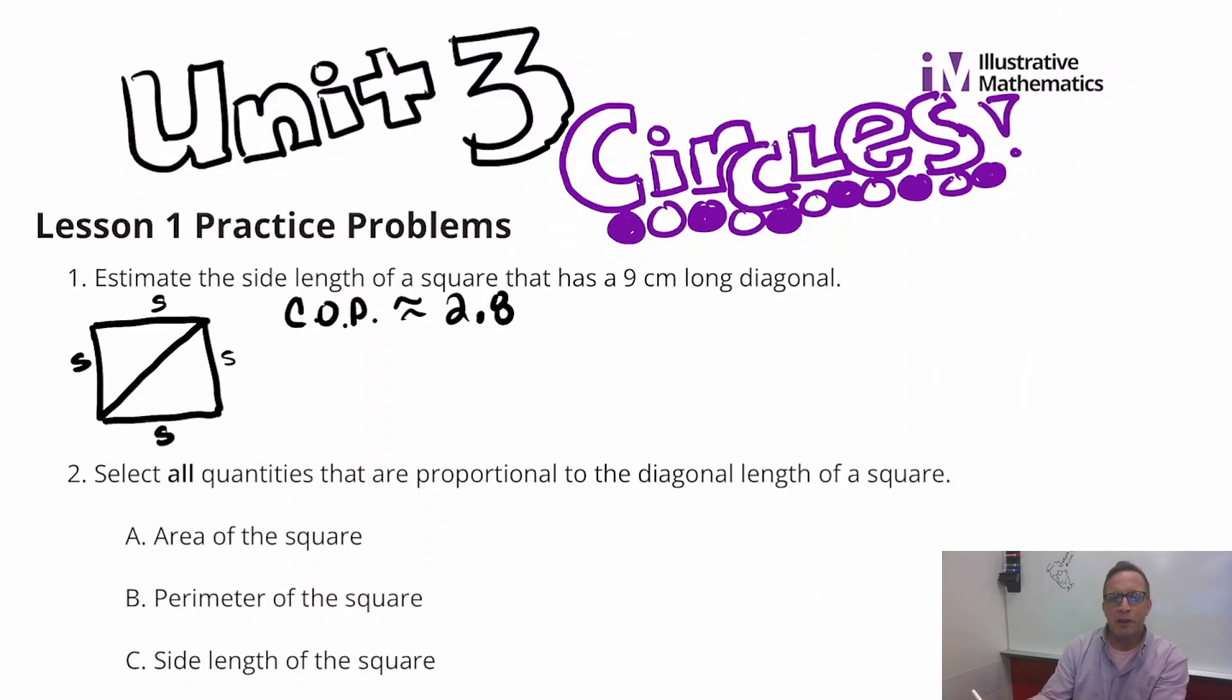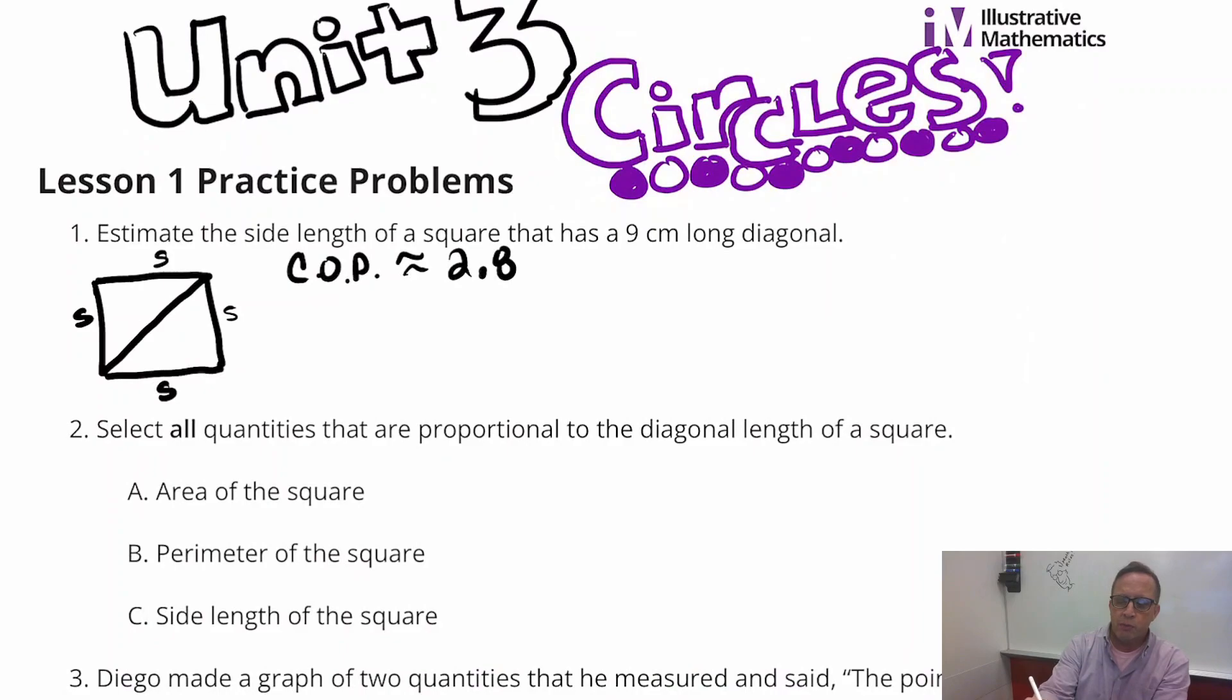You can see whatever the diagonal is, if you multiply that by 2.8, you're going to get the perimeter of that square, or something close to it, not perfect, but you're going to get something pretty close to it. So that's what we have to do for this one. We just have to do 9 times 2.8, which is 25.2.